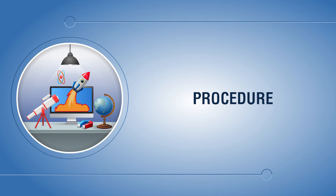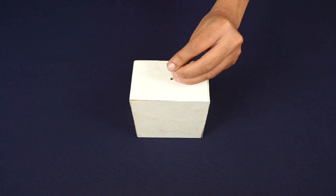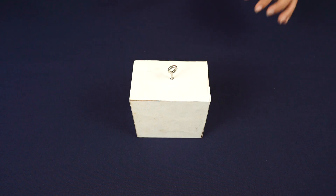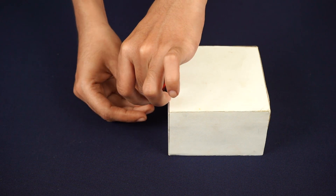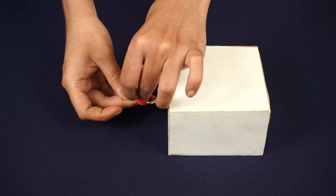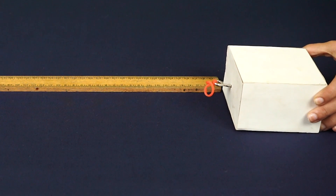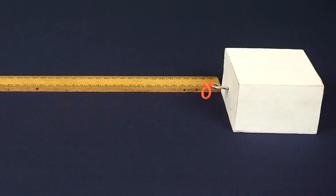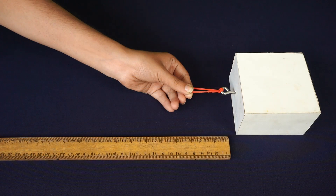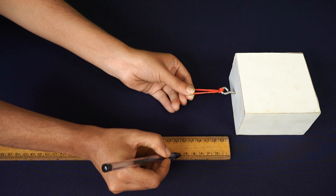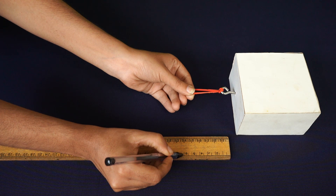Procedure: Fix a hook or nail to the wooden block and tie a rubber band to the hook or nail. Place the wooden block along the meter scale. Pull the wooden block by stretching the rubber band, observe when the wooden block starts to move, and measure the length of the stretched rubber band.